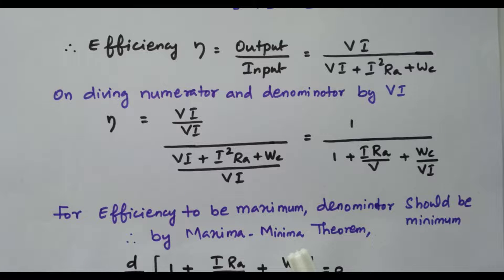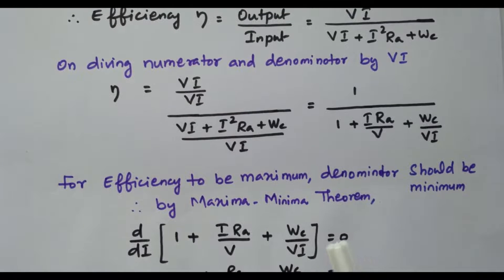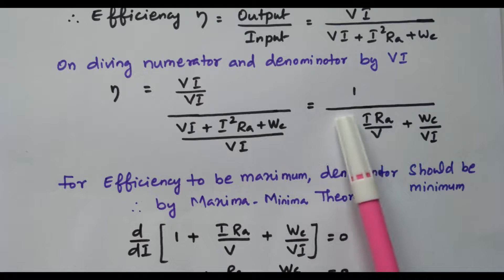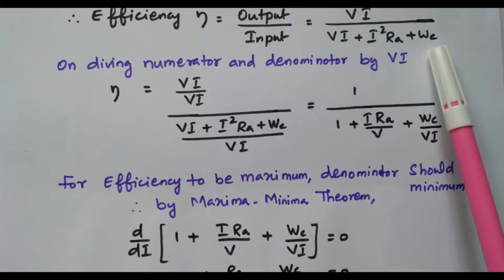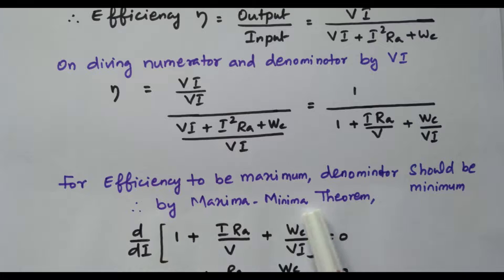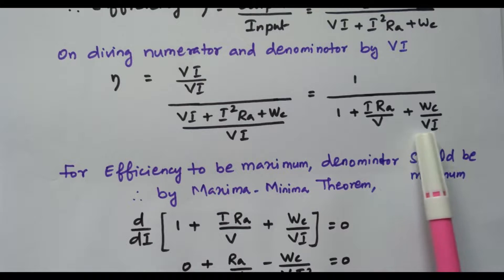For maximum efficiency, the denominator must be minimum. If the denominator — that is, the loss term — is minimum, we automatically get maximum efficiency. We apply the maxima-minima theorem: differentiate the denominator with respect to current I and equate to zero, because the losses are based on current.